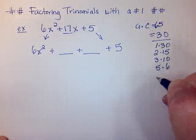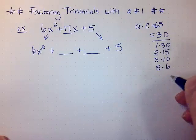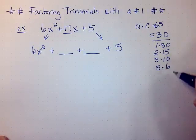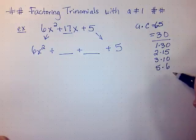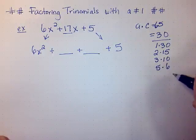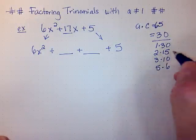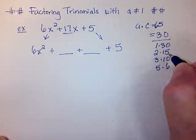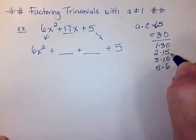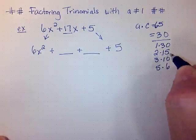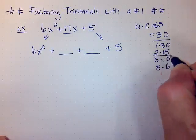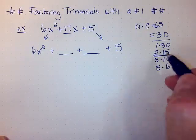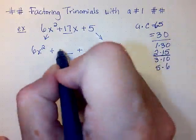These are the list of all the factors of 30. Now I need to figure out which of these add to give me 17. 1 and 30 is going to give me 31, and 2 and 15 will give me 17. So now that I know that 2 and 15 give me 17, I want to take each of these and put it in the blank.